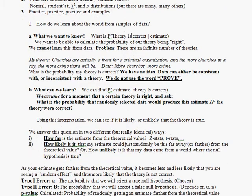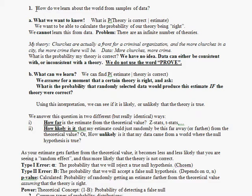So first, epistemology. How do we learn about the world from samples of data? What do we really want to know when we collect data and we do a hypothesis test? Here's what we'd really like to know. I would like to be able to calculate the probability that my theory is right given I see some kind of data and it generates some kind of estimate, some kind of sample mean. Can I calculate the probability my theory is right given the fact that I got some kind of sample estimate? Answer, no. You cannot do that.